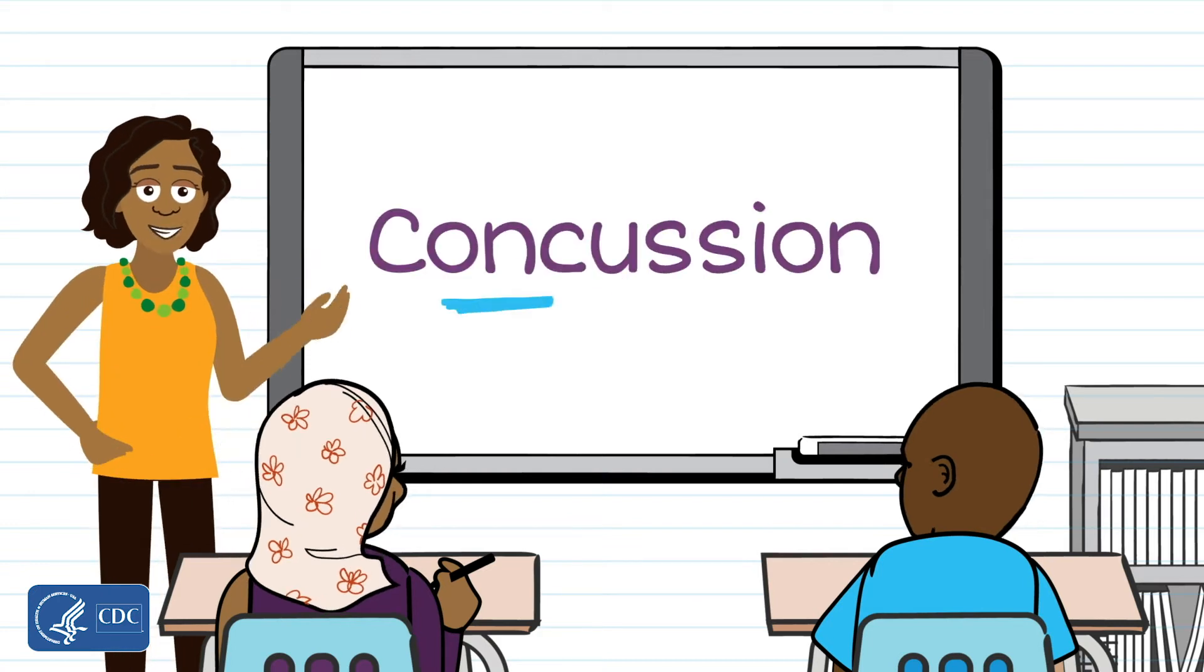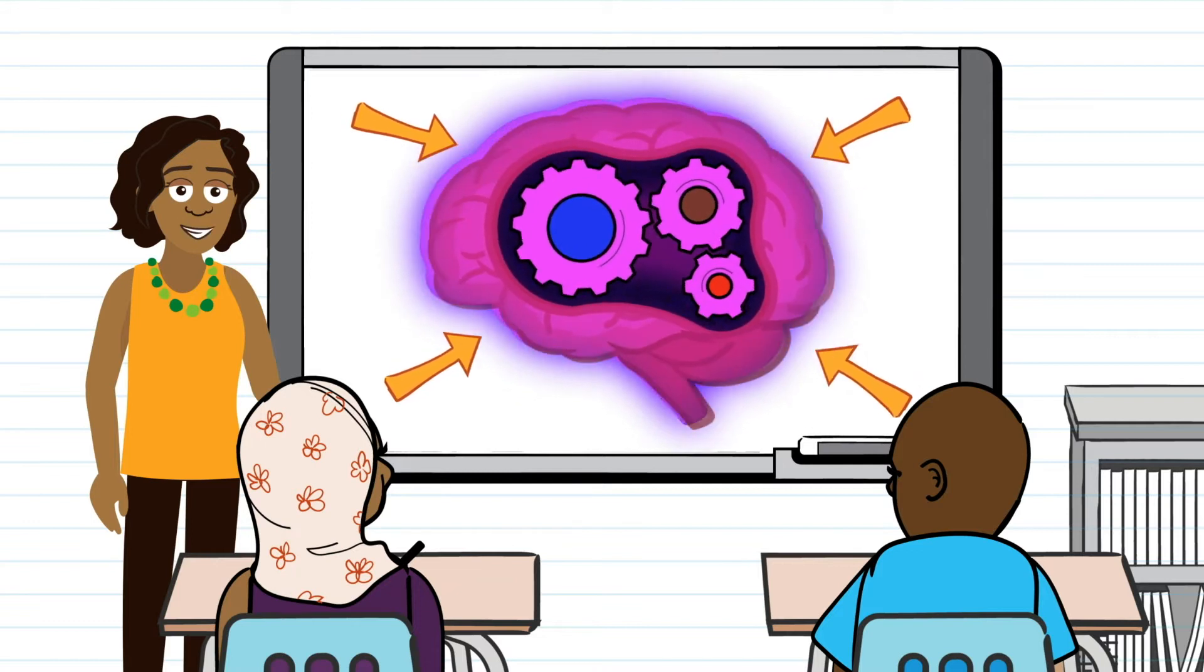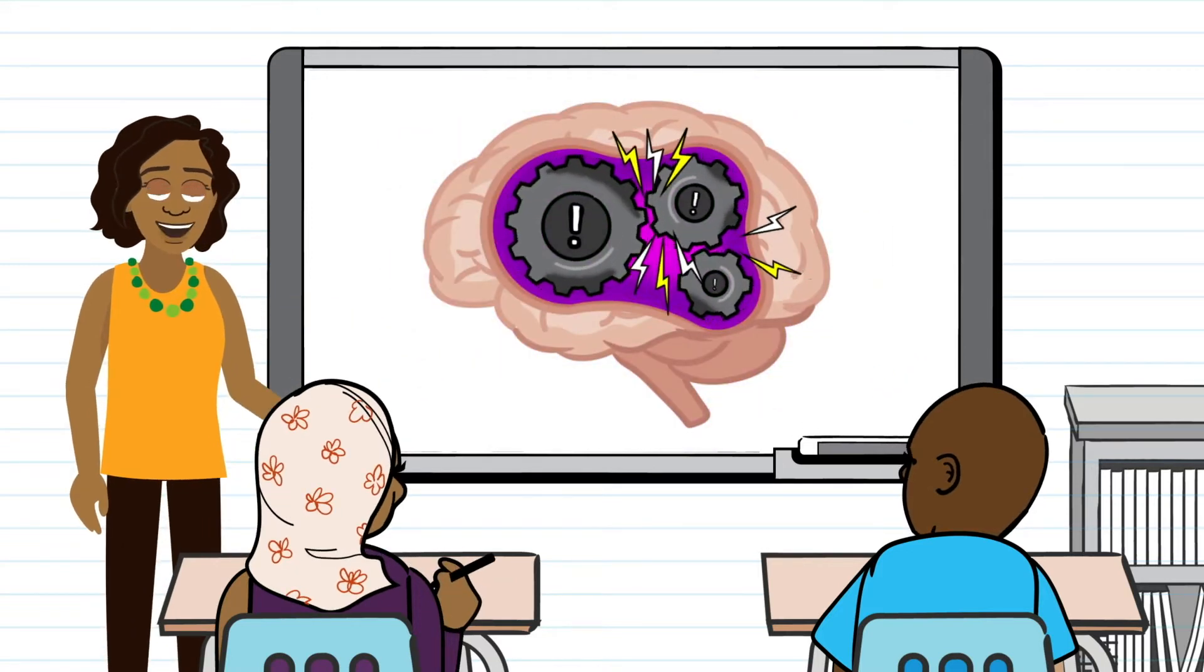First, let's look at what a concussion is. A concussion is a type of traumatic brain injury, or TBI, that can change the way the brain works.